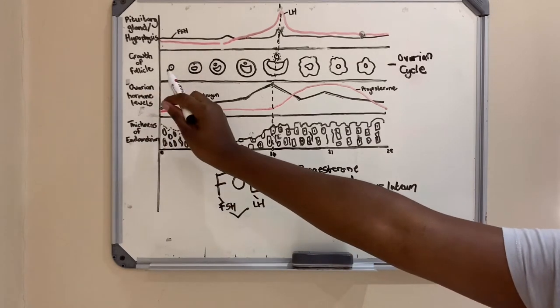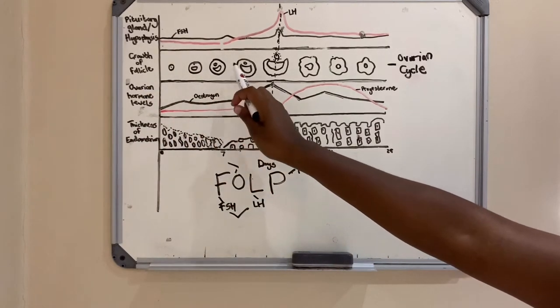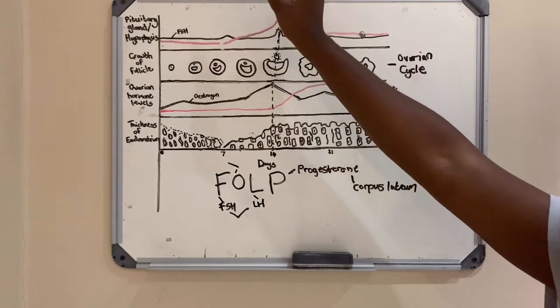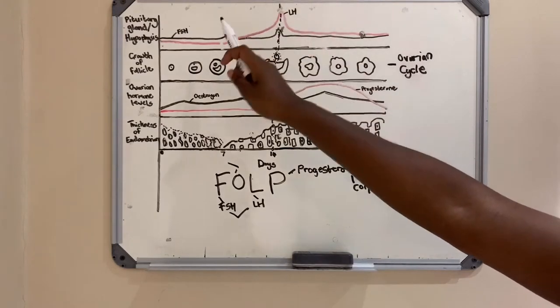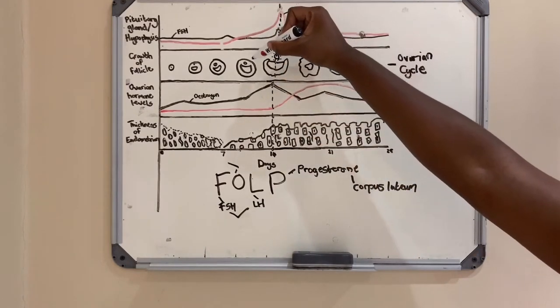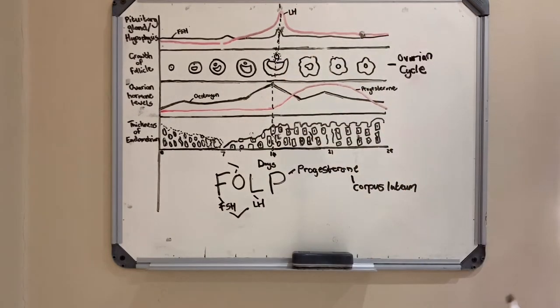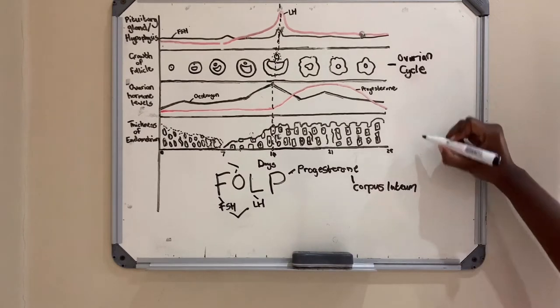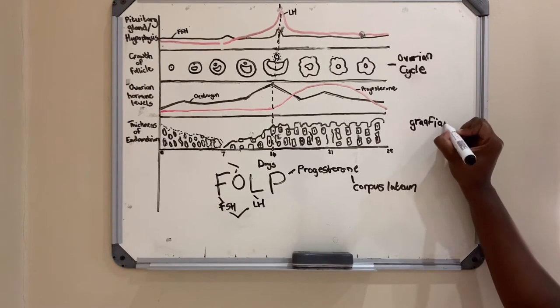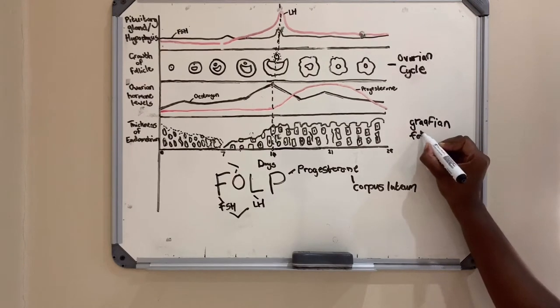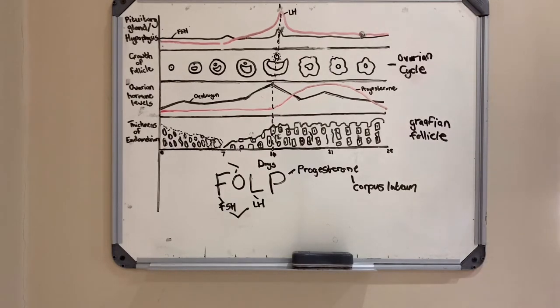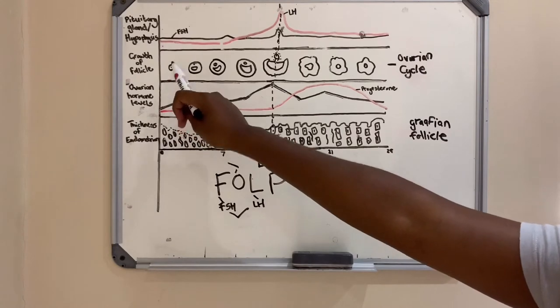The hormone that plays a role in the growth or the development of the follicle is FSH, which is why it's known as follicle stimulating hormone. It grows from being a primary follicle to here where it's known as a Graafian follicle. That is a fully developed follicle, and for it to go from a primary follicle to a Graafian follicle, that is because of FSH.